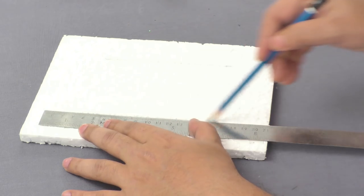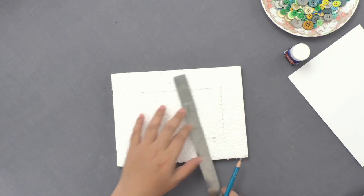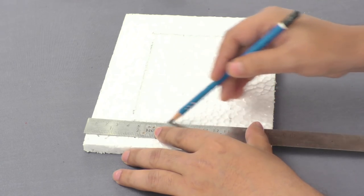First, take a thermacool sheet and mark a rectangular frame using a pencil and scale.